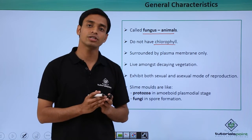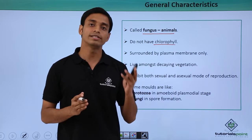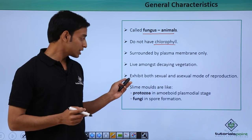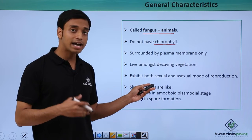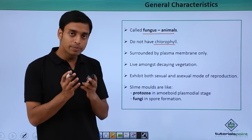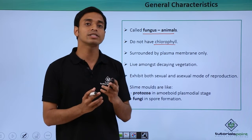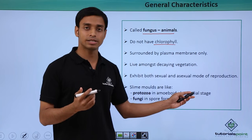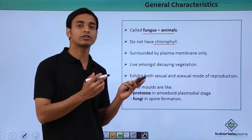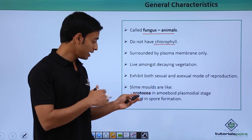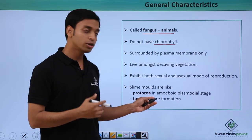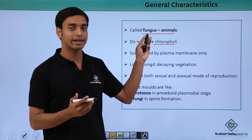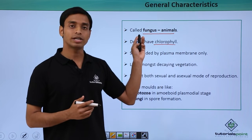Slime molds can exhibit both modes of reproduction — that is, both sexual and asexual modes of reproduction. They are actually like protozoa in that they have amoeboid plasmodial stages, which is similar to protozoa. Interestingly, they also form spores, which is a characteristic of fungi. Hence, you can understand why slime molds are known as fungus animals.